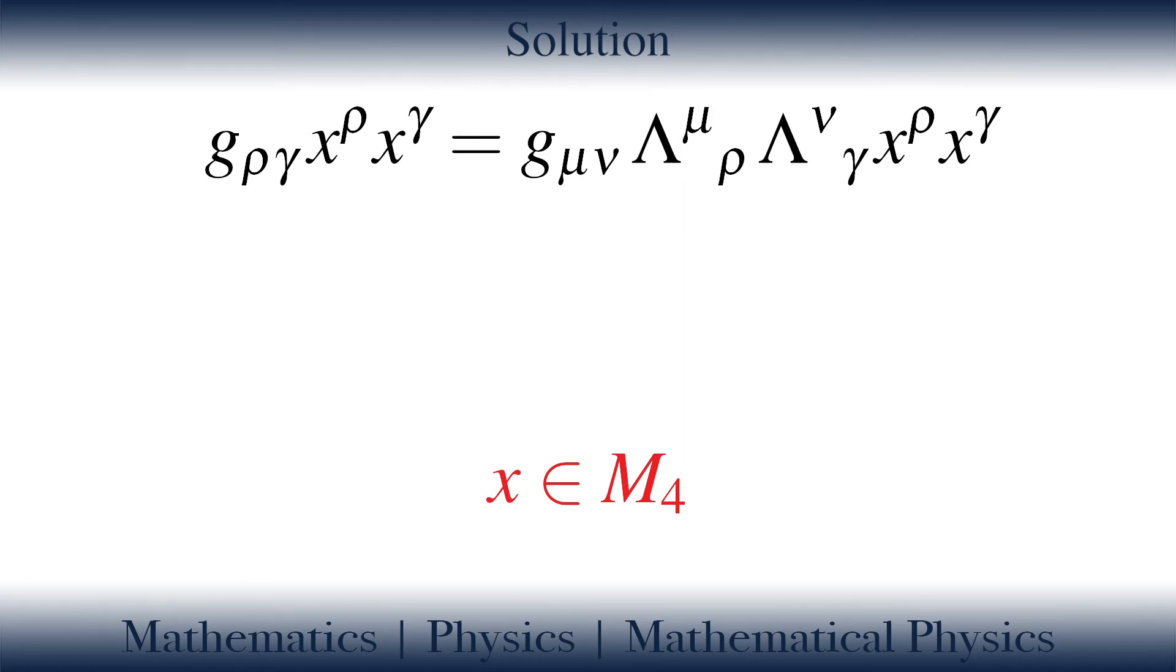Hence, we can cancel the component of x from both sides. The equation boils down to this form.